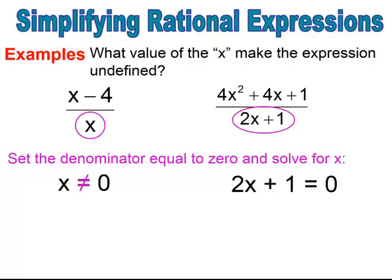In the second rational expression, we have an expression in the denominator that I would have to set equal to zero. So I need to take that expression, 2x plus 1, and set it equal to zero, then solve for x to find the value that would create a zero in the denominator. It's a two-step equation: first subtract one from both sides, then divide through by two, and I get x equals negative one-half. If I plug negative one-half into 2x plus 1, I would get zero in the denominator. Therefore, this is a restriction — I can have any value of x except negative one-half.